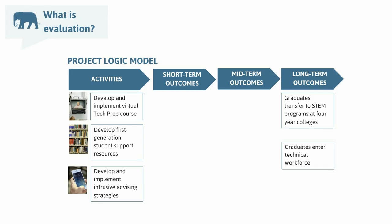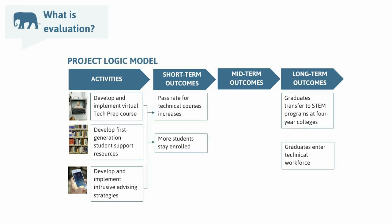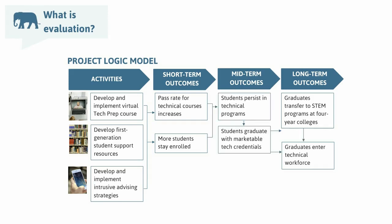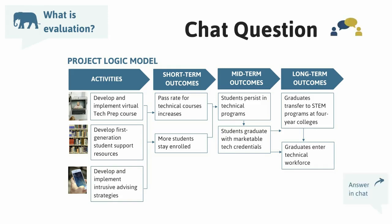Now we need to connect the activities to these desired long-term outcomes. It's expected these activities will lead to more students passing technical courses and staying enrolled. If those short-term outcomes are achieved, the college will see more students persisting in their technical programs and graduating with marketable credentials, which they can use to transfer to a four-year STEM program or enter the workforce. What questions do you think Jen and her evaluation team should ask? It might be helpful to think about what Jen might want to know to impress students, NSF, or her college administrators.